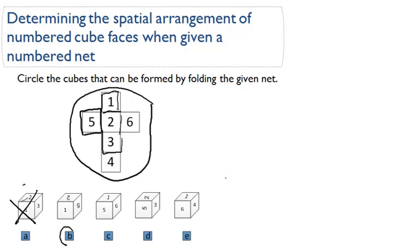So moving on. Now, option B. So option B has 1, 2, and 5 in that arrangement. So let's look at, let's first compare and see if those numbers are in the appropriate places. We're not going to look at just the orientation of the numbers just yet. But we're going to look at where they are relative to this net.